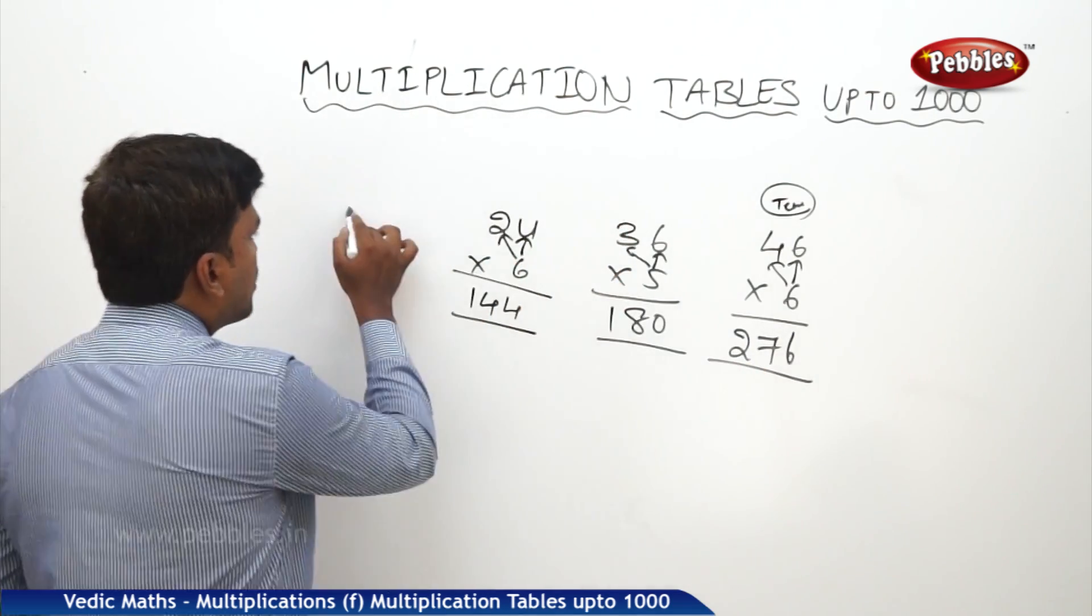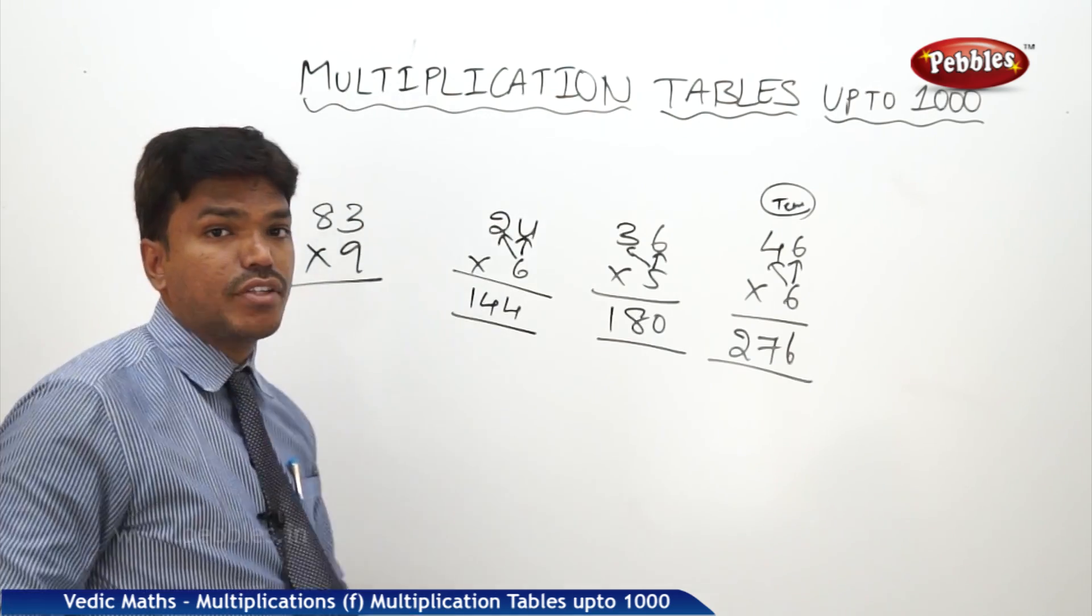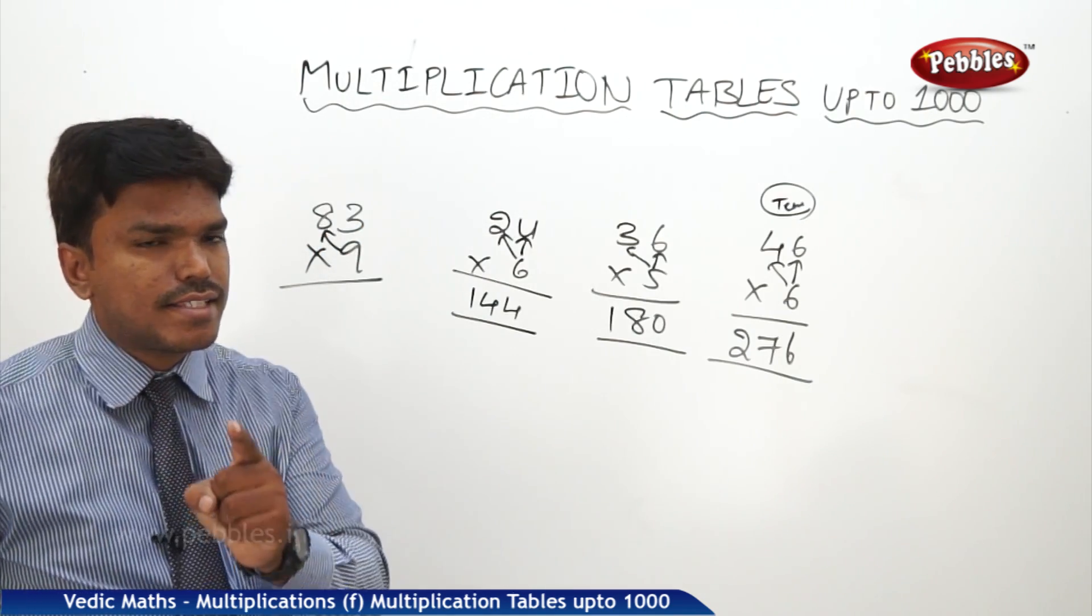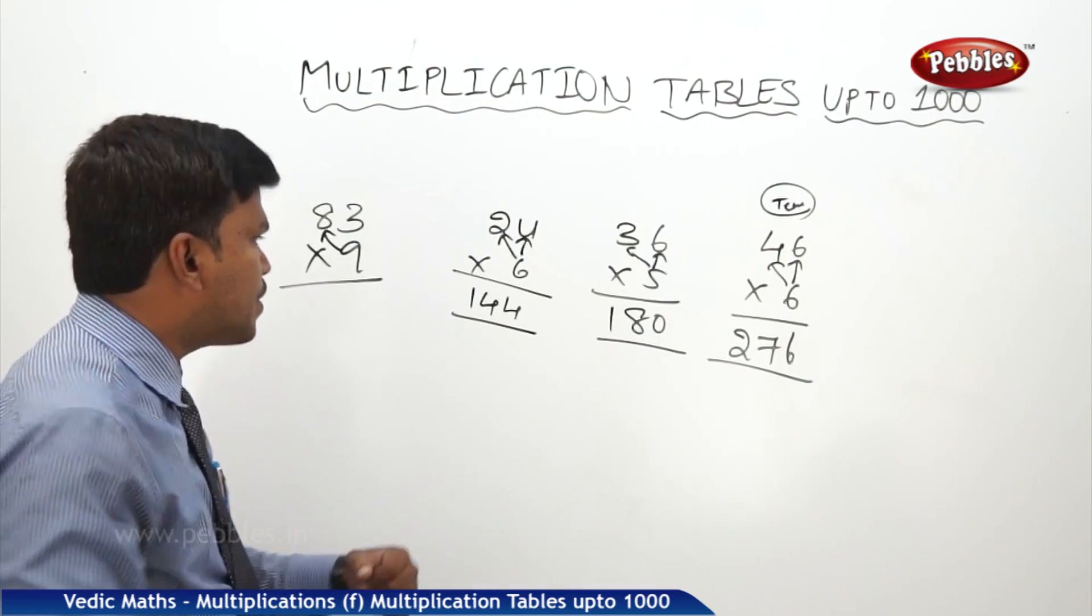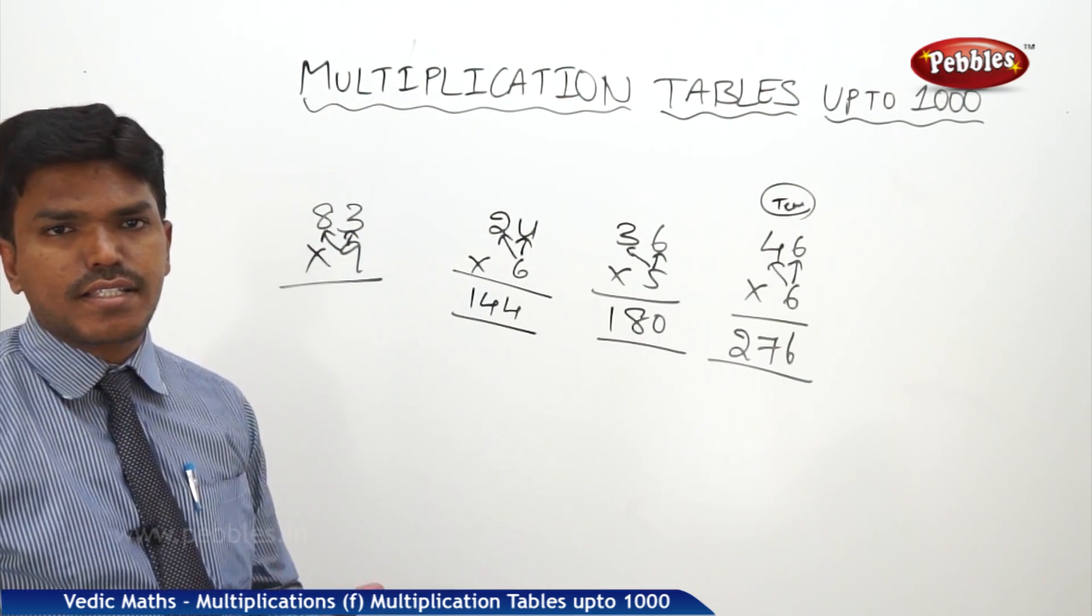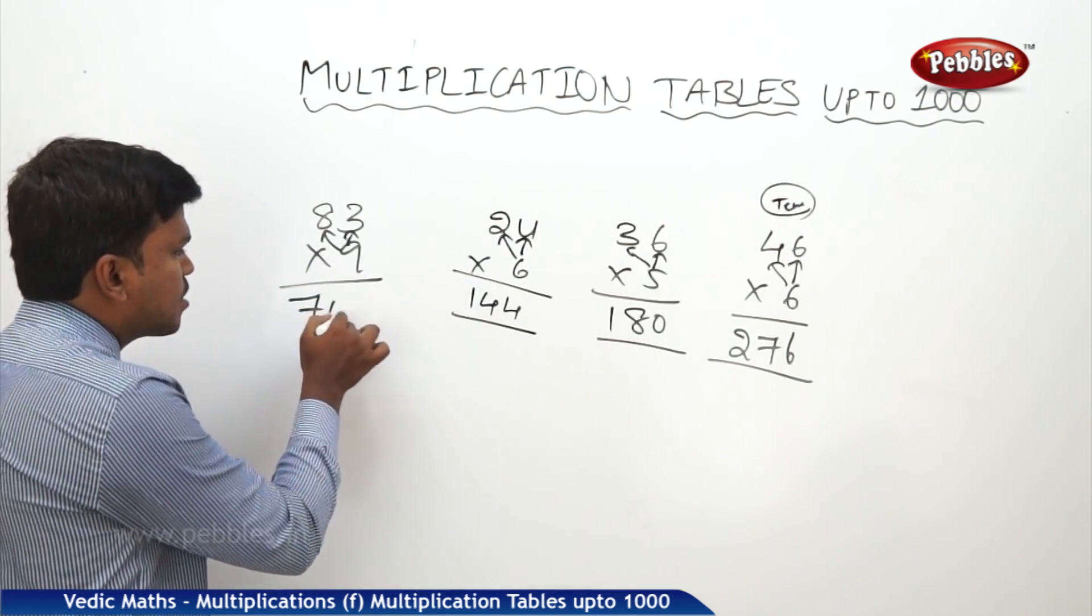Similarly, let us take 83 into 9. I want to multiply 83 into 9. What is 9 eights? 72, take it as 720. Keep in the mind 720 plus 27. 720 plus 27, 747.